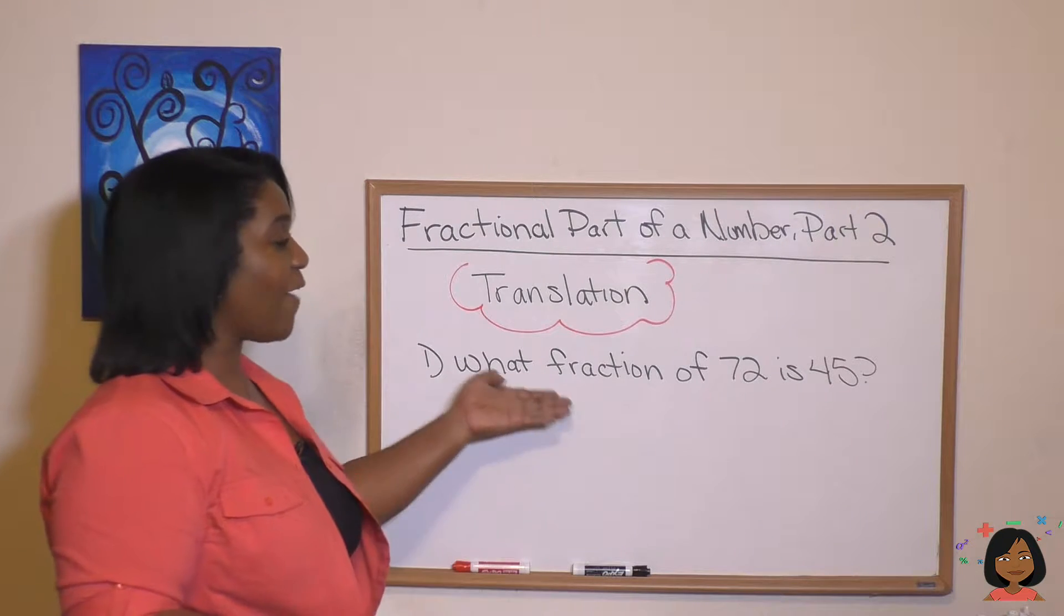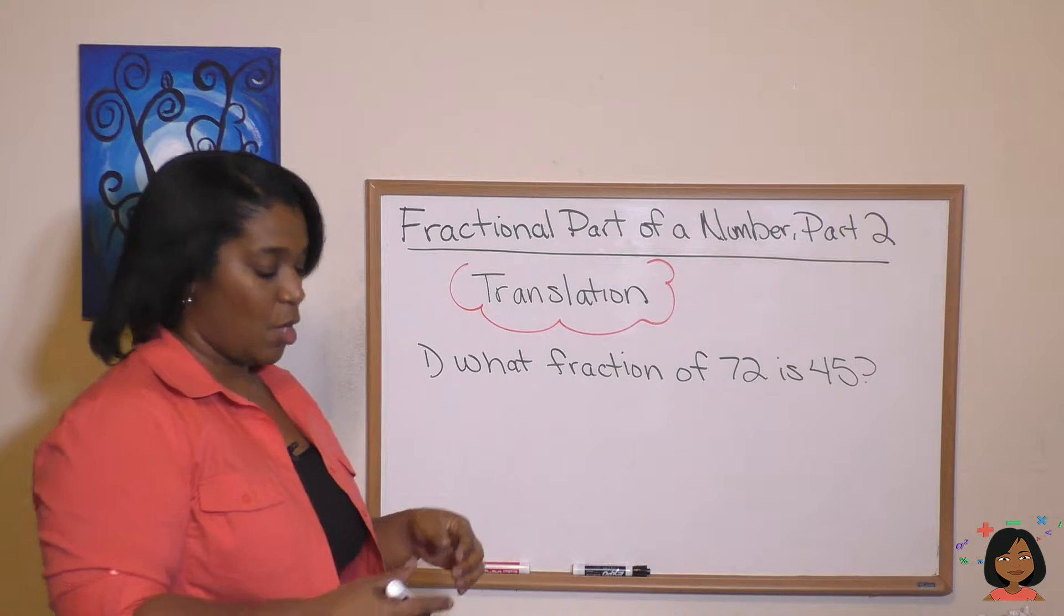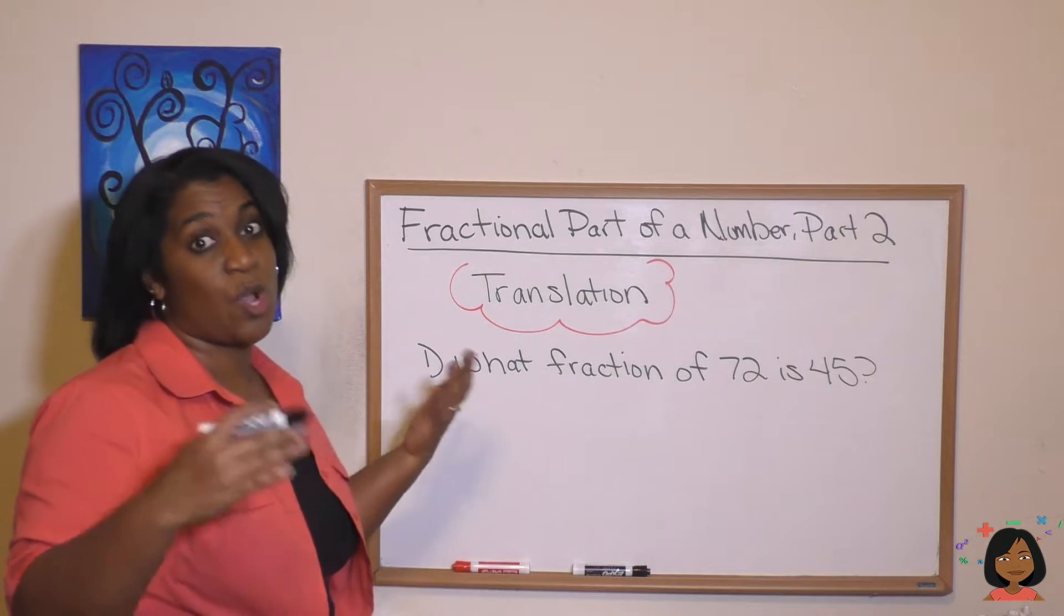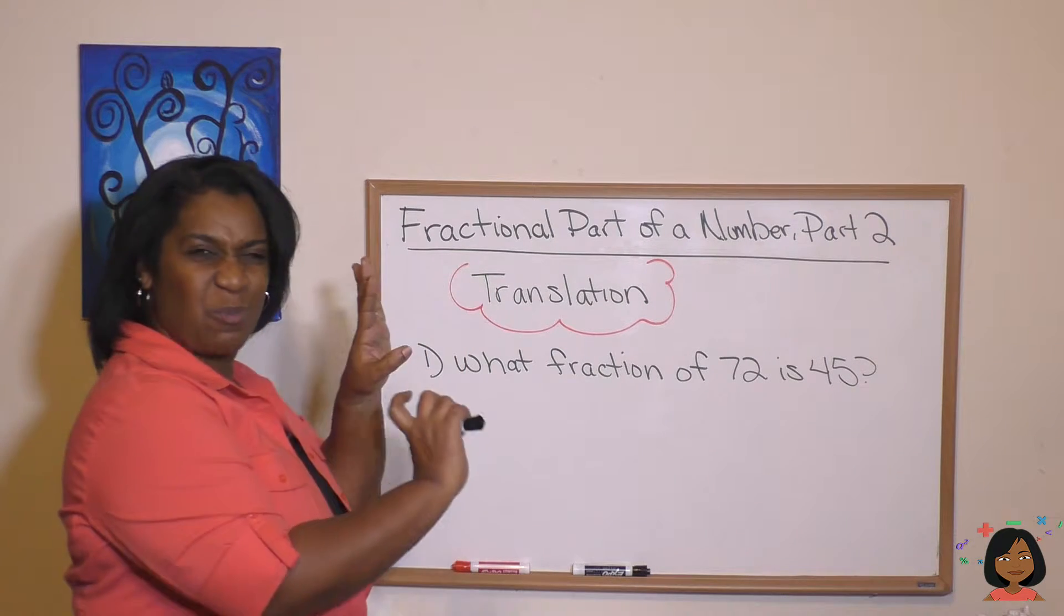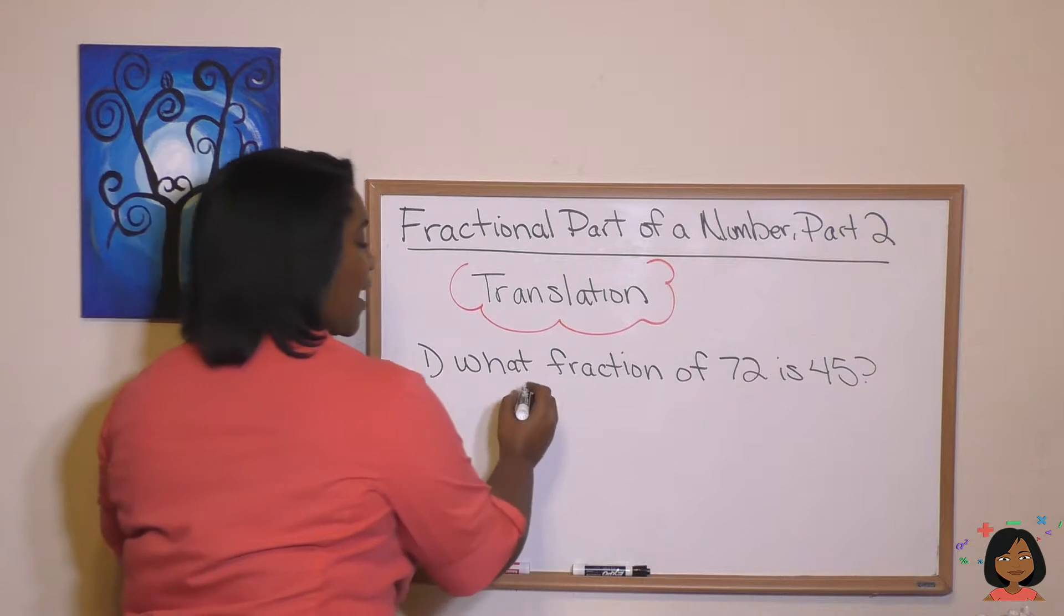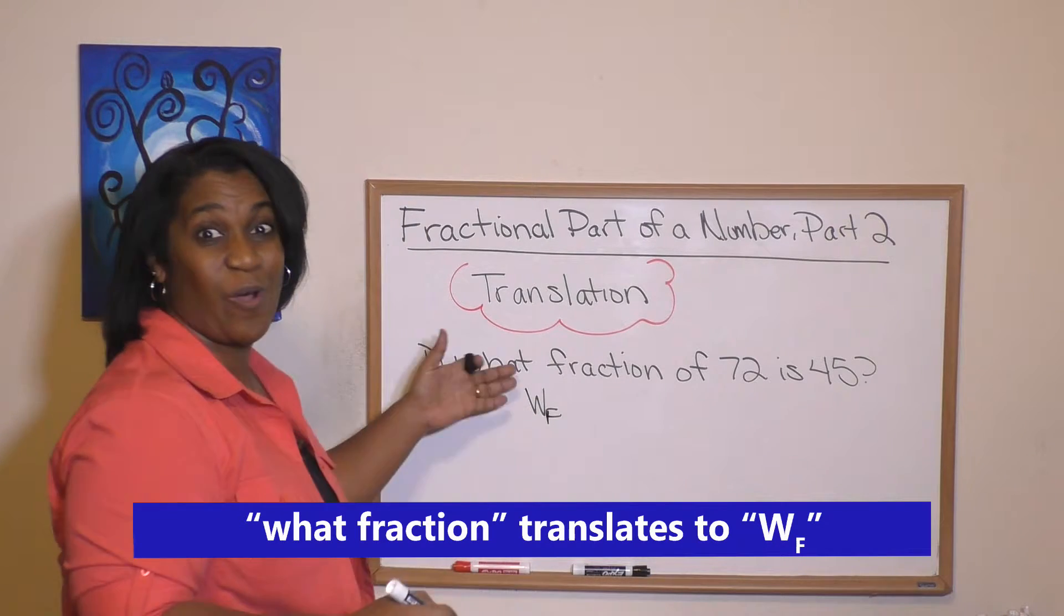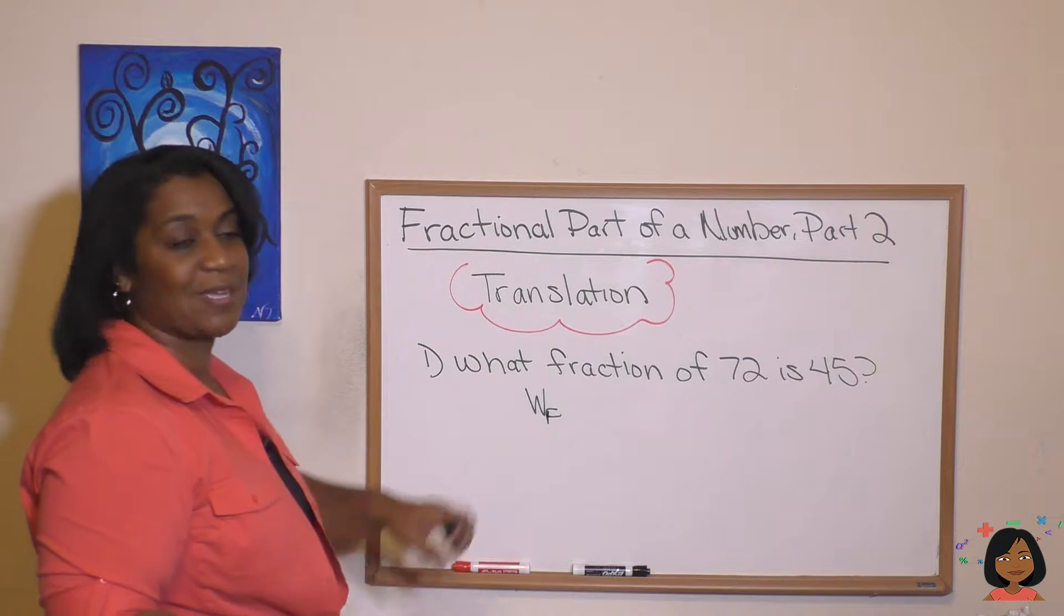So here's a problem: What fraction of 72 is 45? Let's just start with what fraction. Before we were asking what number, and we had that capital W with a small n down in the corner. Since we're asking for fraction, Saxon wants us to do W with a little f down in the corner, what fraction, to say that we're looking for a fraction. So that's how that translates.